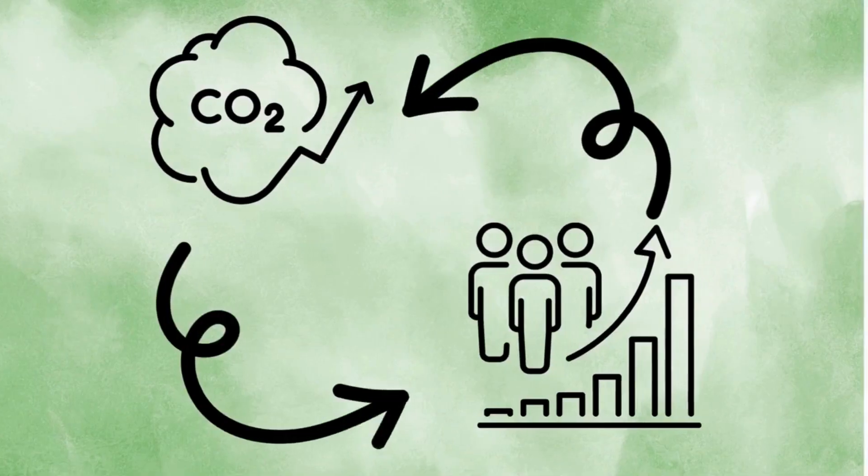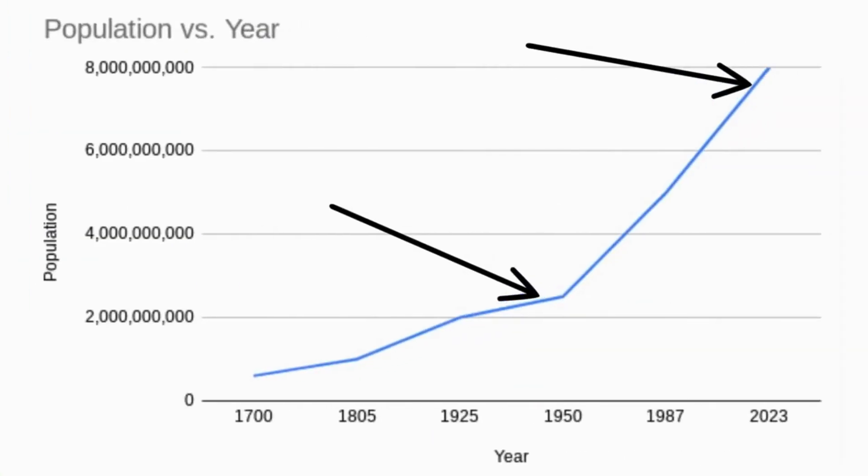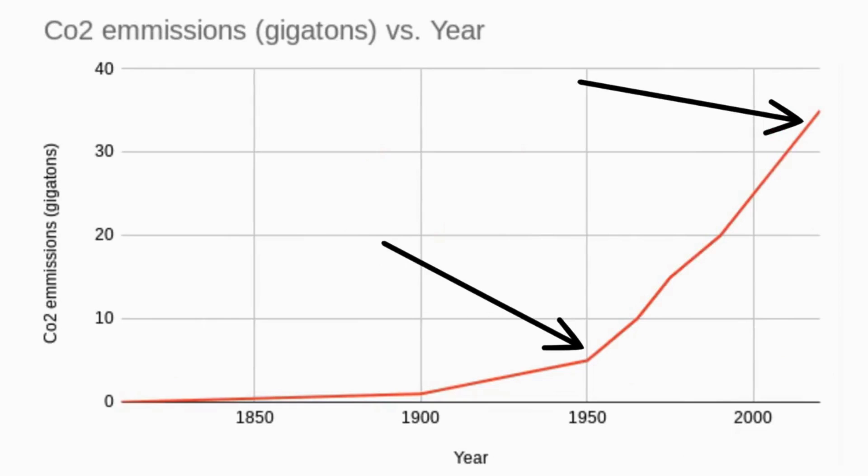Unfortunately, carbon dioxide emissions and population growth are directly correlated. In 1950 and 2020, the population was 2.5 and 7.8 billion, respectively. In those years, carbon emissions were 5 and 35 gigatons.